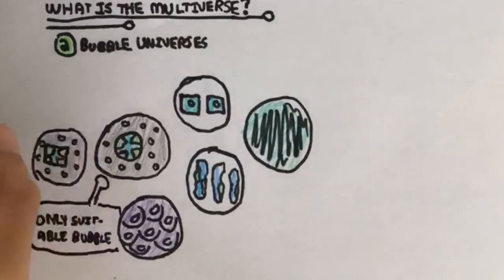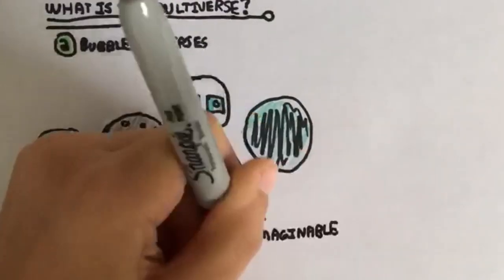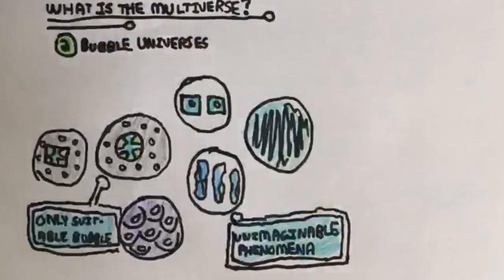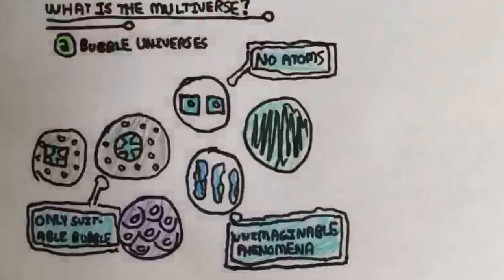It's hard to imagine what would go on in these, because we do know that without these specific laws of physics, many essential things like atoms couldn't form. These universes would most likely be beyond our imagination, with such different building blocks and principles.